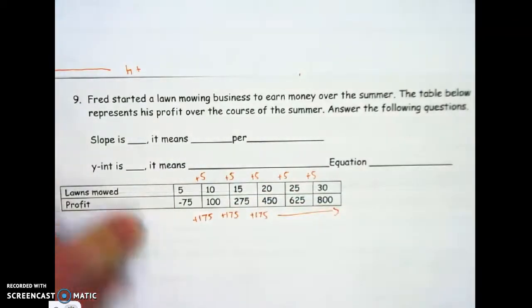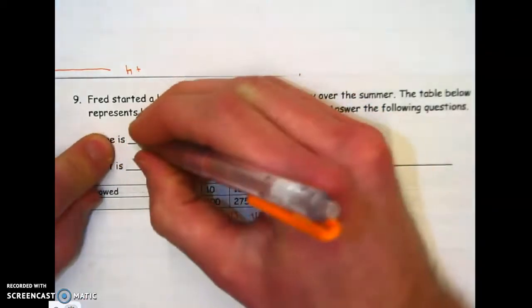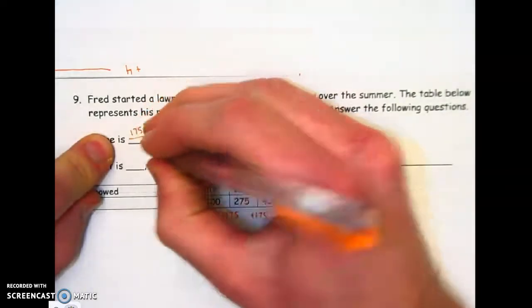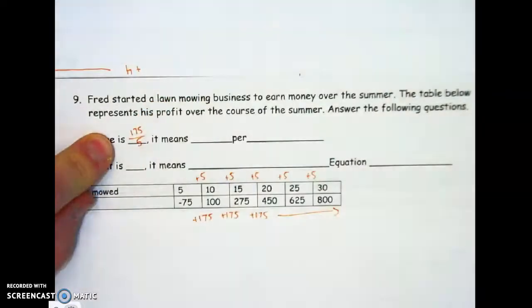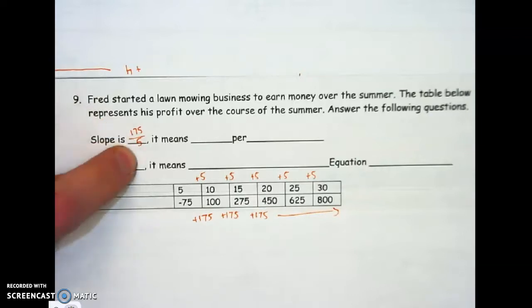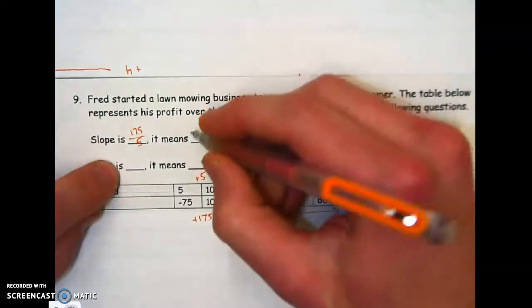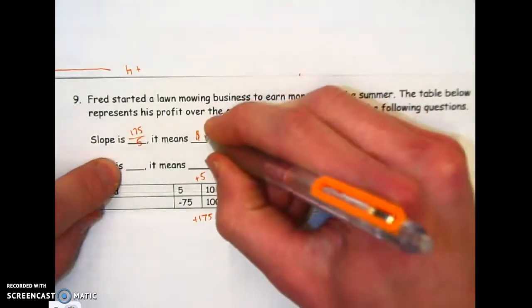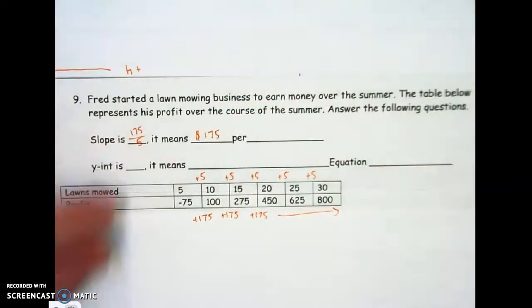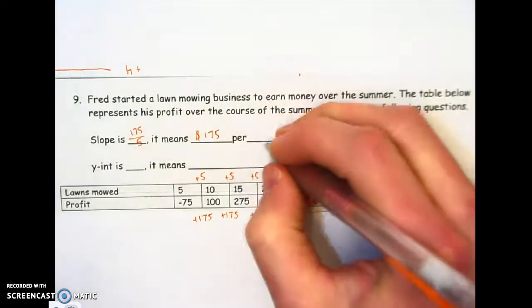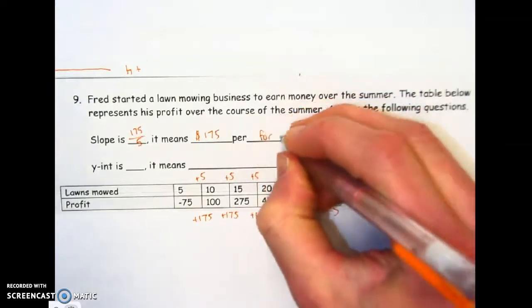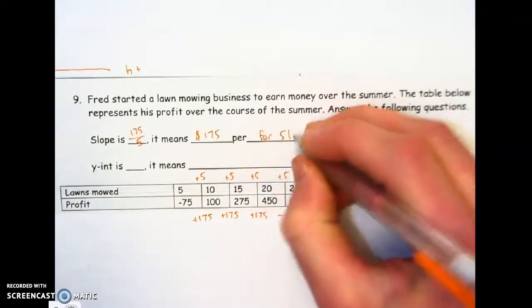All right, now I can write my slope right here, the bottom number on top. 175 over 5. What does that mean? That means it's $175 for five lawns. That's how much you make. That's how much Fred makes. You could divide it down into per one, yes. Either is right. For five lawns.